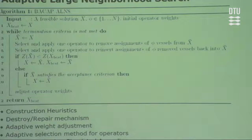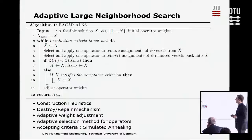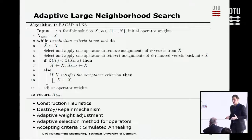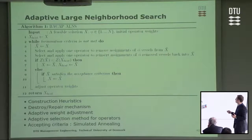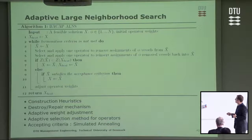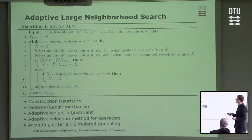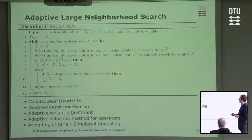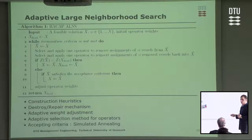Moving to the heuristic part of this chapter, we implement an Adaptive Large Neighborhood Search (ALNS) method. It's based on a construction, destroy, and repair flow: starting with an initial solution, we remove some vessel assignments, then reinsert them and evaluate outcomes. If improving, we apply that solution; if not, we apply a simulated annealing acceptance criterion. We use adaptive weight adjustment and adaptive selection of operators.